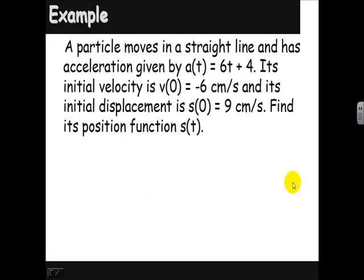In this example, we have a particle moves in a straight line and has an acceleration a of t equals 6t plus 4. Its velocity v of 0 is negative 6 centimeters per second. Its initial displacement s of 0 is 9 centimeters. Find its position function s of t.